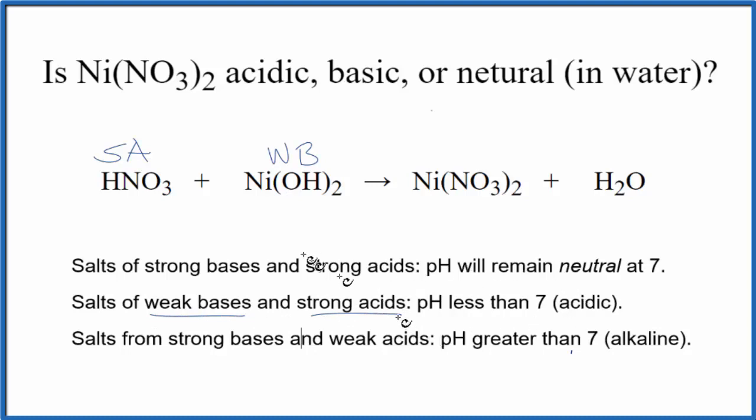And according to these rules, when the nitric acid and the nickel-2-hydroxide neutralize each other to form this nickel-2-nitrate salt and water, the pH is going to be less than 7. That means it's going to be acidic.